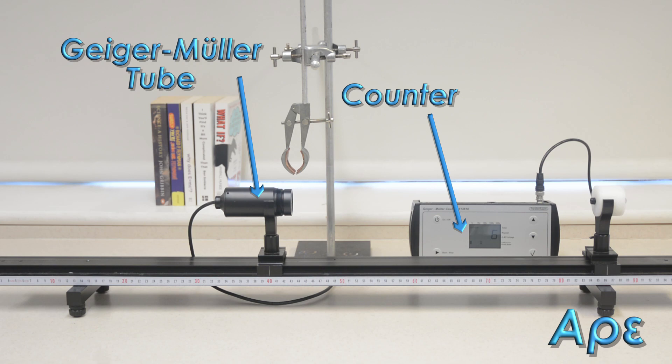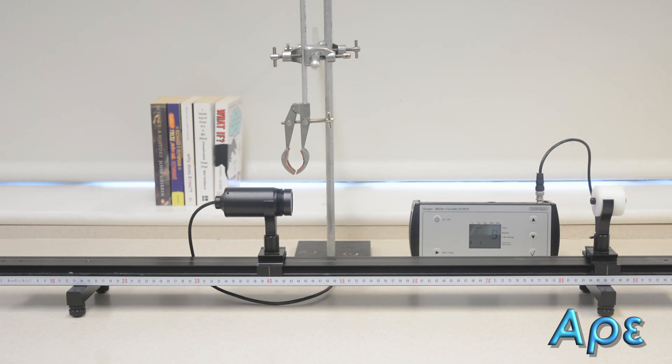You'll notice on the right hand side there is no source placed into the holder and so we are merely measuring background radiation. You can also see a stand, boss and clamp which will be used in a later video to look at how different materials absorb radiation.